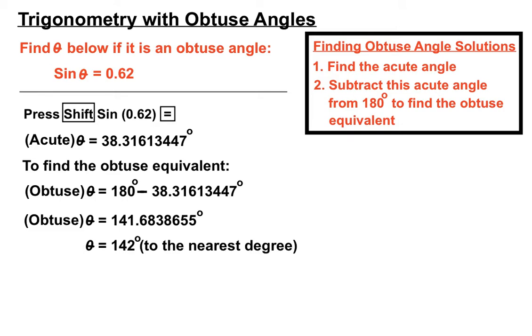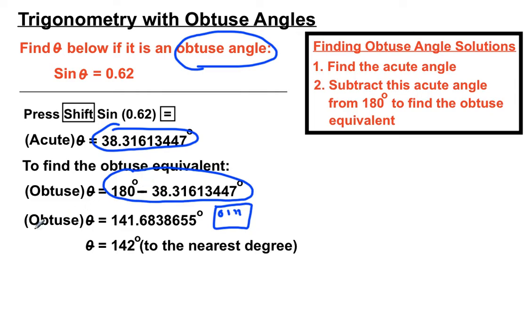Now sometimes they might want us to round it off. At this point here we might like to, if they want us to round it off in degrees, minutes and seconds, we might like to press that extra degrees button to transfer that into degrees, minutes and seconds. But it depends on how they want us to round that off. So they asked for an obtuse angle here. What did we do? We kind of ignored them at first and found an acute angle first. And then we took that acute angle away from 180 to find an obtuse angle.